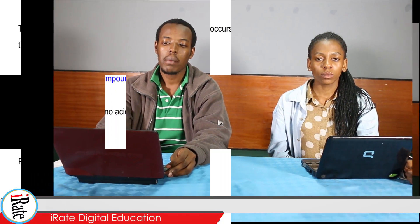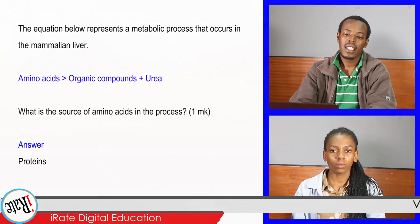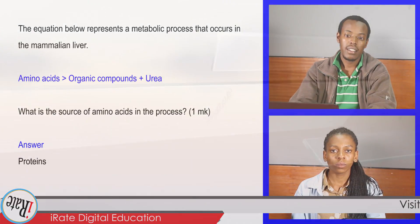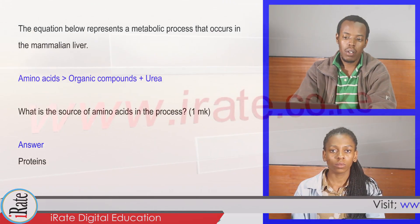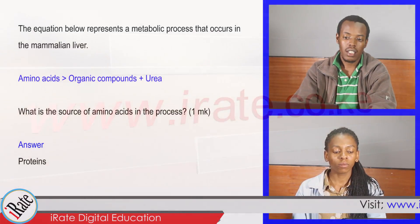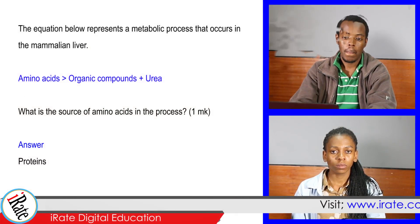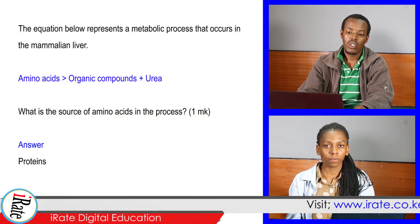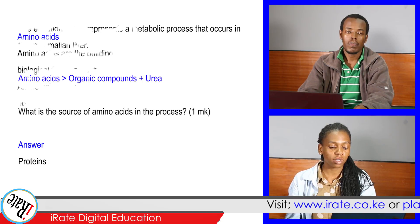The equation below represents a metabolic process that occurs in the mammalian liver: amino acids equals organic compounds plus urea. What is the source of amino acids in the process? Proteins.